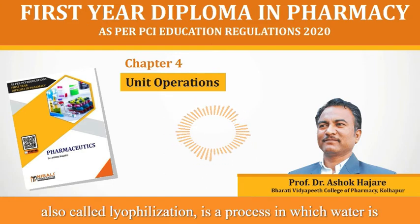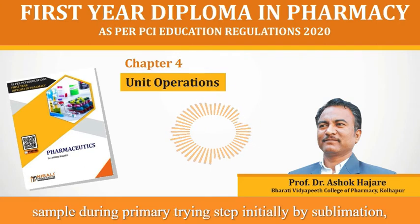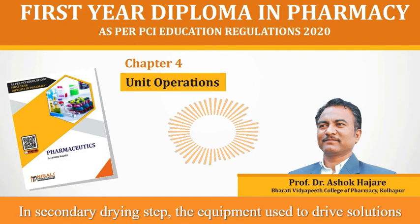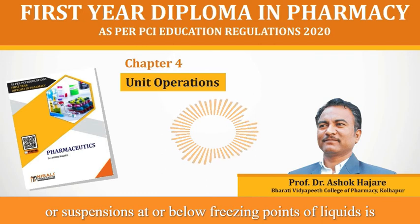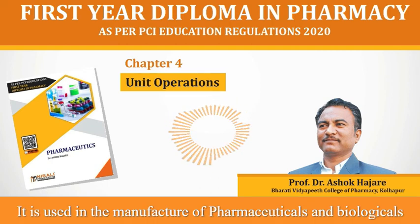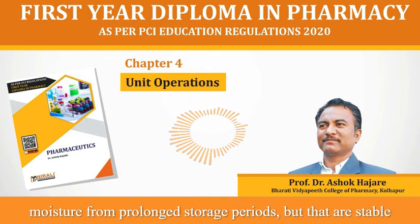Freeze drying, also called lyophilization, is a process in which water is frozen in a pre-freezing step, followed by its removal during the primary drying step — initially by sublimation, then by desorption — and finally by diffusion at slightly higher temperatures in the secondary drying step. The equipment used to dry solutions or suspensions at or below the freezing point of liquids is called a freeze dryer. It is used in the manufacture of pharmaceuticals and biologicals that are thermolabile or otherwise unstable in water or moisture during prolonged storage but are stable in the dry state.